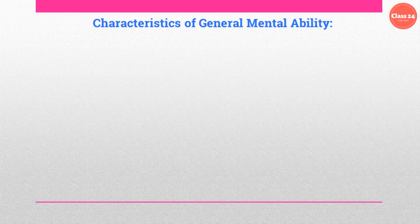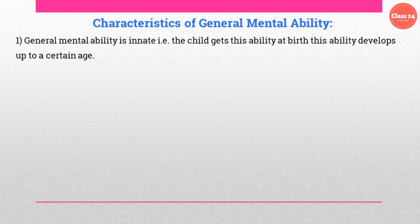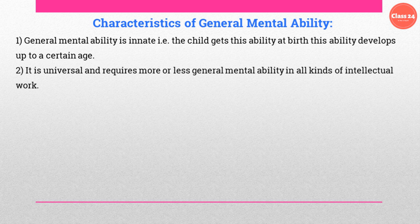Now we will discuss the characteristics of the general mental ability. General mental ability is innate — the child gets this ability at birth, and this ability develops up to a certain age. It is universal, and requires more or less general mental ability in all kinds of intellectual work.